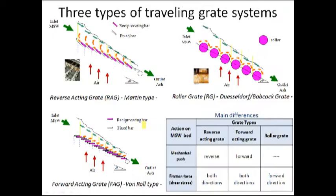There are various types of traveling grate. For example, this is three types of traveling grate: Reverse acting grate, roller grate, and forward acting grate.